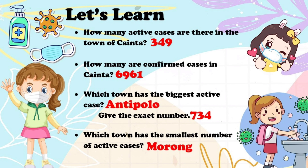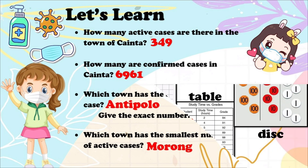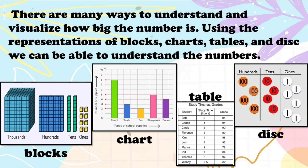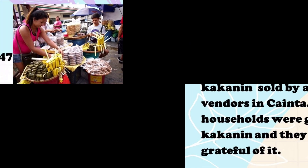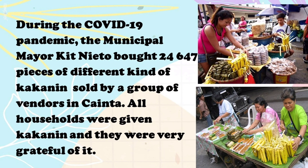Based on the reports shown, these are the numbers of active cases and confirmed cases. There are many ways to understand and visualize how big a number is. Using the representations of blocks, charts, tables, and disks, we can understand the numbers. Let's learn how to visualize numbers — read the paragraph and answer the questions that follow.